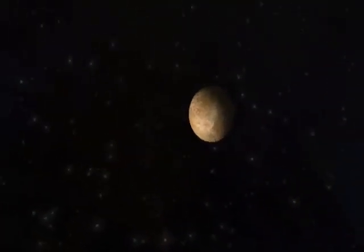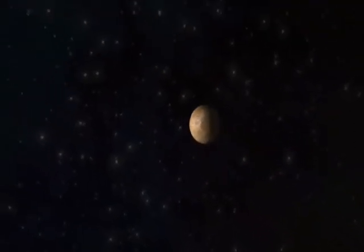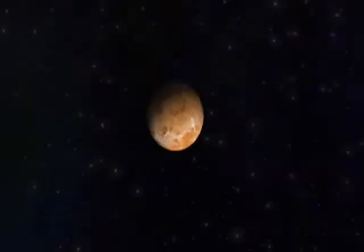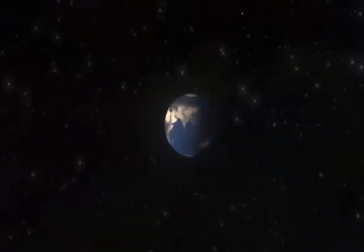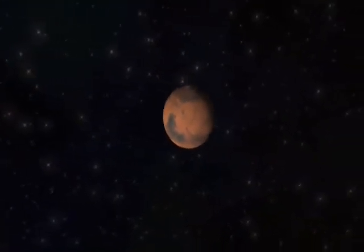The planet Mercury is the closest to the sun, followed next by our sister planet, Venus. Our own Earth is third. Our neighbor, Mars.